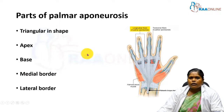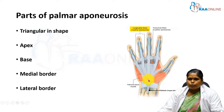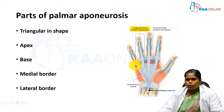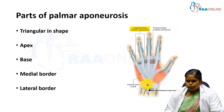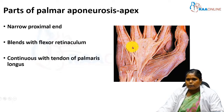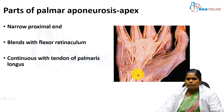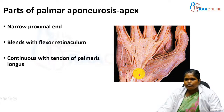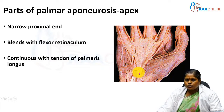Coming to the parts of the palmar aponeurosis — it is a triangular structure with an apex, base, medial border, and lateral border. The apex is the narrow proximal part of the palmar aponeurosis. As discussed earlier, the palmar aponeurosis is considered a degenerated part of the palmaris longus tendon. The apex blends with the flexor retinaculum present proximally.